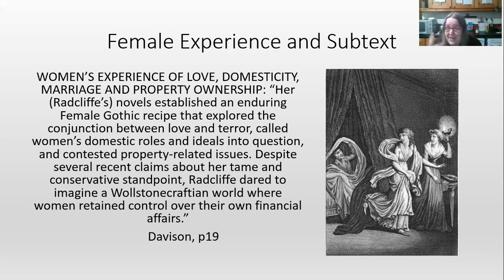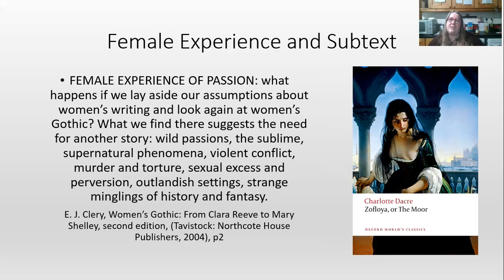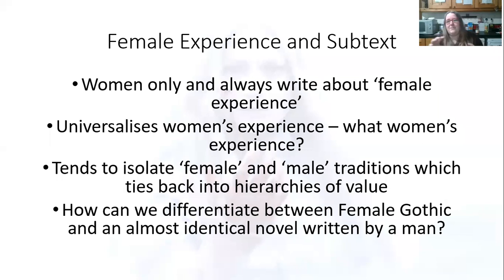In The Mysteries of Udolpho, a lot of the adventure takes center stage, but much of it is actually about Emily's economic position and inheritance being manipulated by various figures. In the end she gains control of her inheritance, but then gives it up to Valancourt when she marries him. To call it a Wollstonecraftian world is going a step too far. E.J. Cleary pushes back and notes that if we lay aside assumptions about women's writing and actually look at women's Gothic, we find: wild passions, a sublime supernatural, violent conflict, murder and torture, sexual excess and perversion, outlandish settings, and strange minglings of history and fantasy.